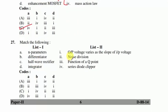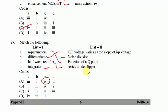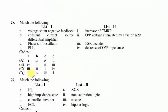Question 27: match the following. h-parameters are a function of the Q-point; differentiator output varies as the slope of the input voltage; half-wave rectifier is for series diode clipper; integrator is for noise reduction. Half-wave rectifier for series diode clipper is important to remember. Suitable option A is correct.